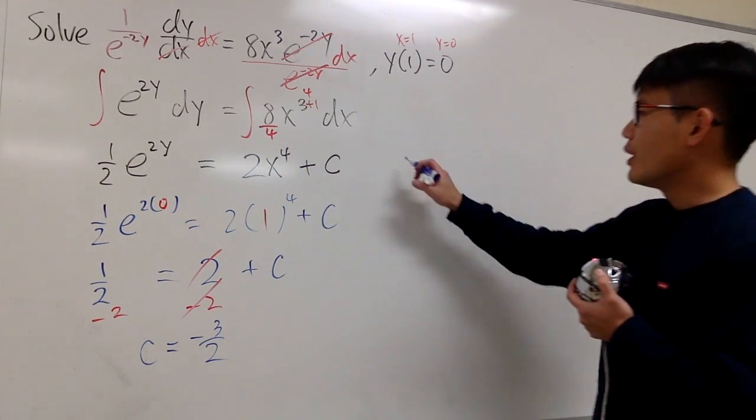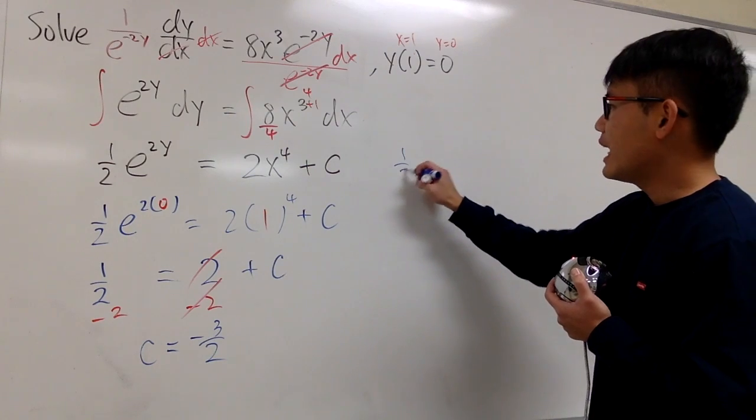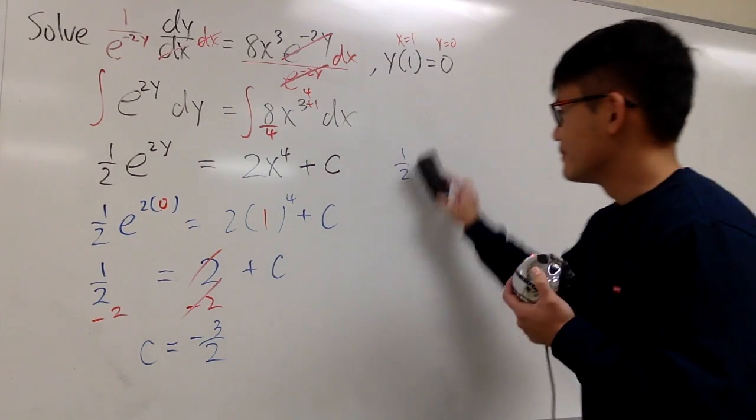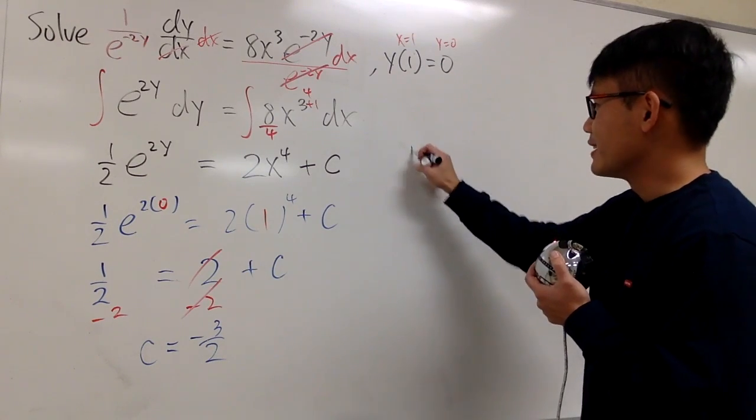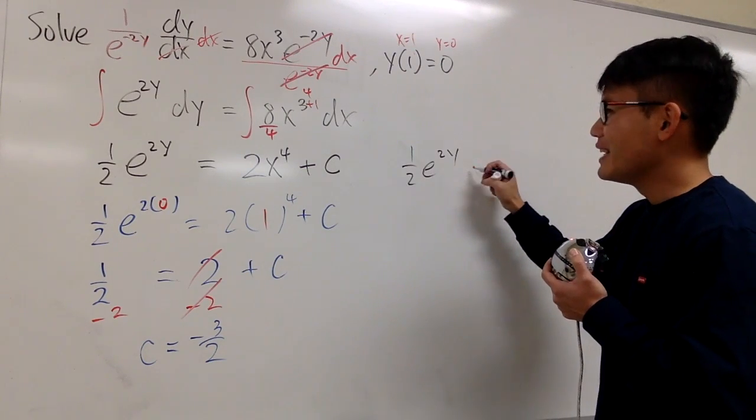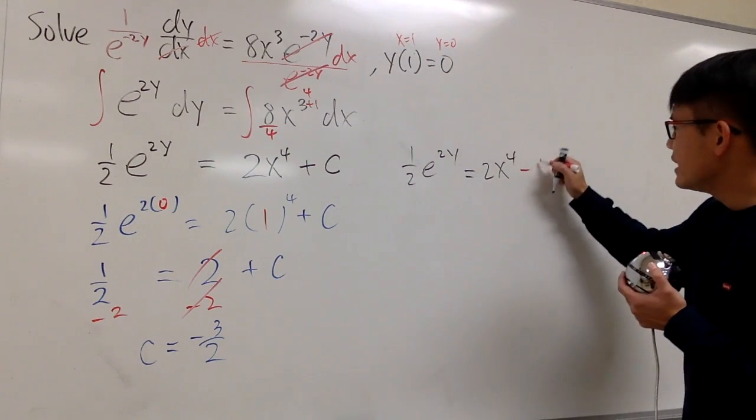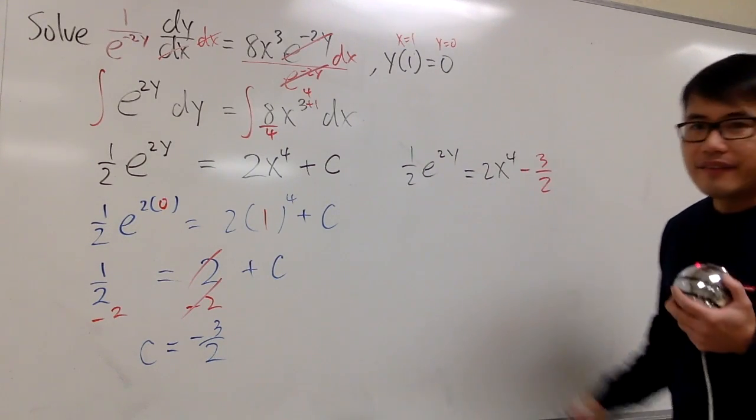So here, you can just write this down as 1 half e to the 2y is equal to 2x to the 4th power. And the c is that, negative 3 over 2.